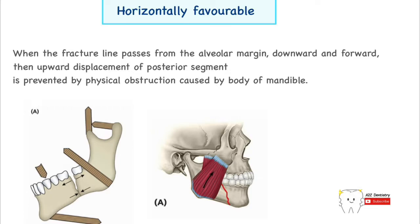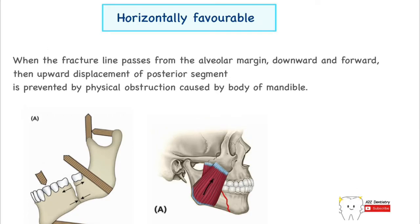In a horizontally favorable fracture, the fracture line passes from the alveolar margin downwards and forwards. The mandible breaks into two parts. There would be an upward displacement of the proximal segment — the angle of the mandible along with the coronoid and condylar process — but this is prevented by the physical obstruction caused by the body of the mandible itself. The muscles masseter, temporalis, and medial pterygoid also prevent this upward displacement, making it a horizontally favorable fracture.